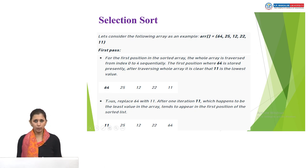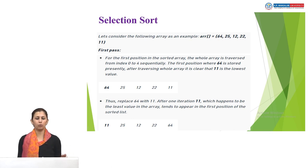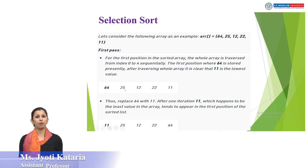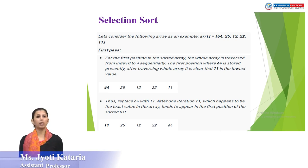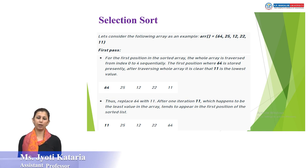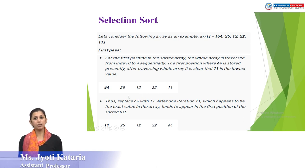Now I check whether 64 is actually the minimum value. I compare 64 with the second element, 25. Since 64 is greater than 25, 64 can't be at the starting point — 25 should be there. Now I assume 25 as the minimum value and compare it with the next element, 12. Since 25 is not less than 12, the condition is false, so I update the minimum value to 12.